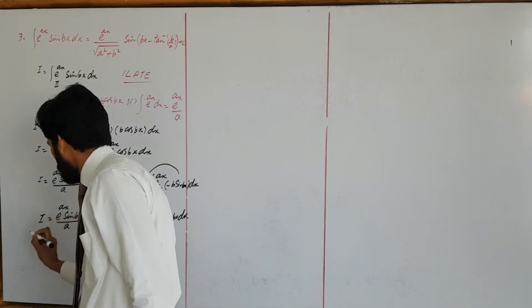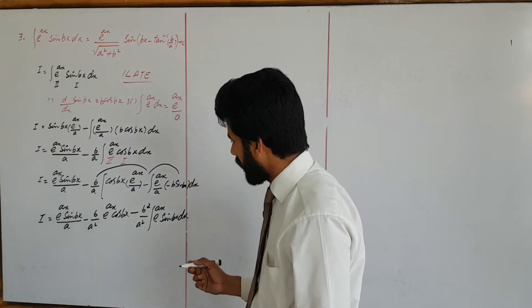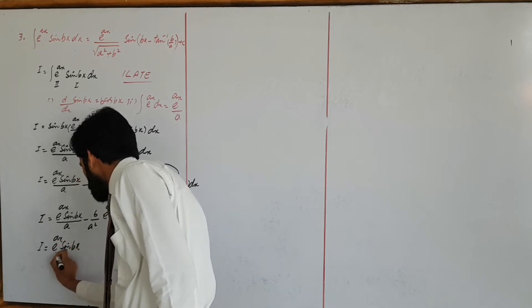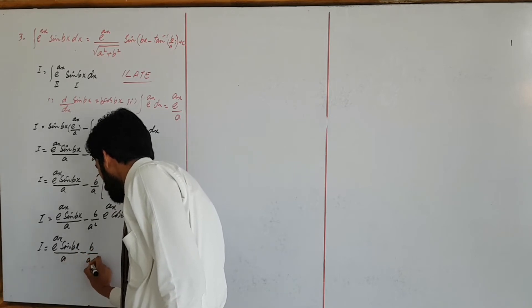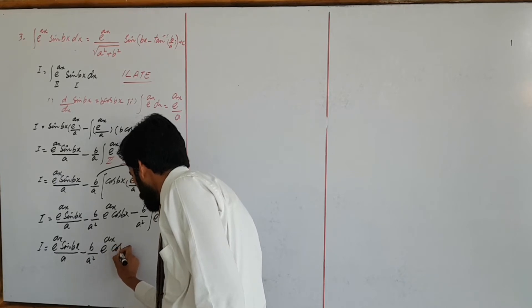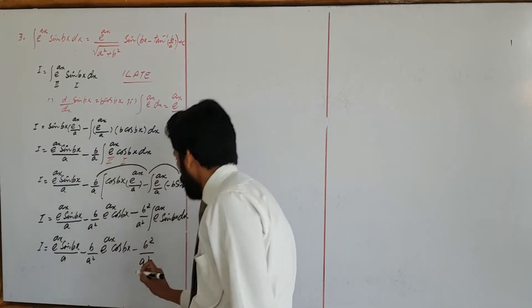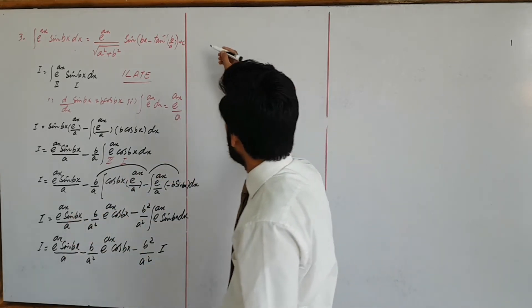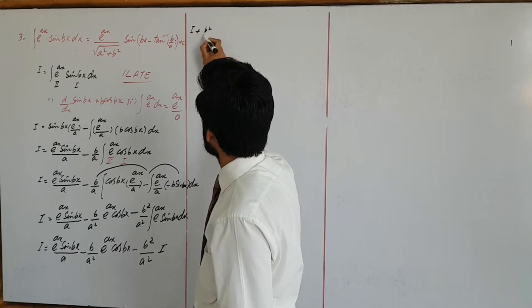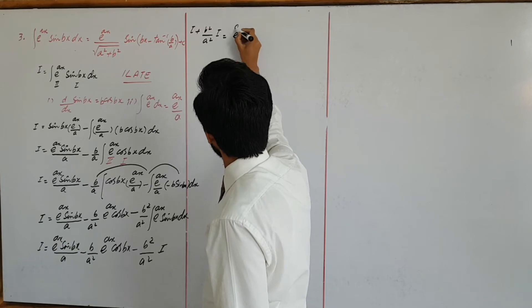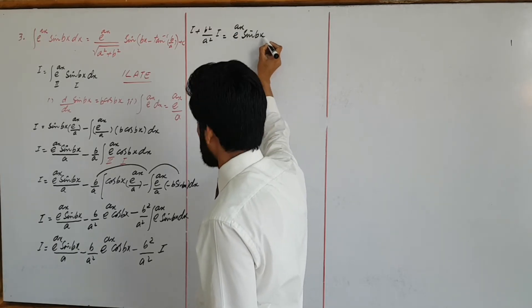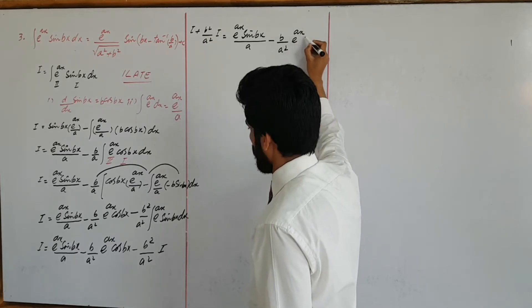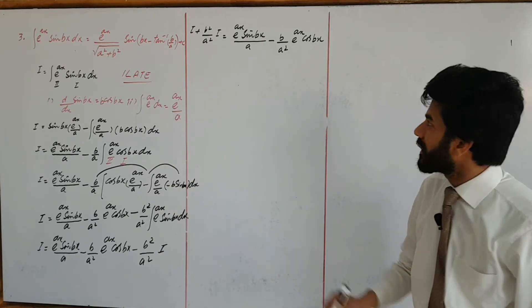अब left side क्या है — हम again simplify करेंगे। Right side: e to the power ax sin vx upon a, minus v upon a squared into e to the power ax cos vx। यह student notice करें — यह term again वही integral बन गया है जो हमने I लिया था। तो left side पर I plus b squared upon a squared into I रखेंगे, तो positive बनेगा।